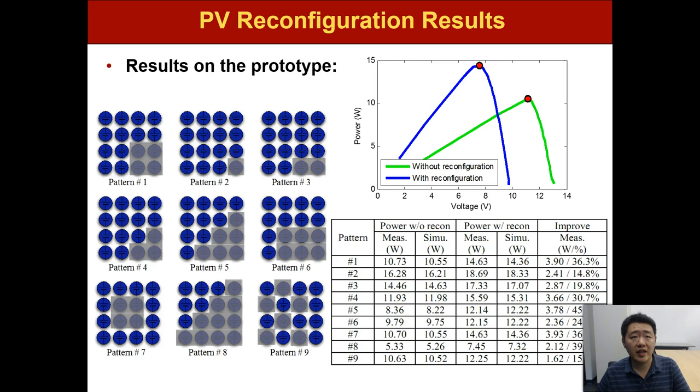Here I show some results on the prototype. We can see that we manually shaded some parts of the prototype PV panel, and then we performed the optimal reconfiguration. As we can see from the results in the partial shading pattern one.